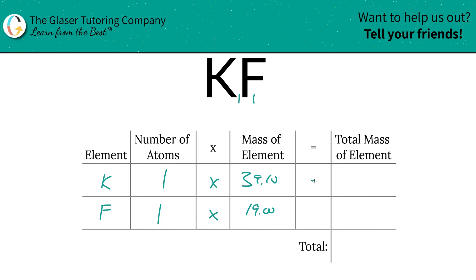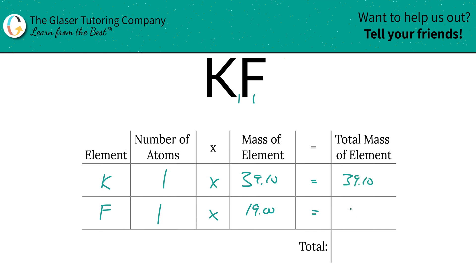Then to find the total mass of each element of the compound, we're simply going to multiply this row on together. So that's going to be 39.10 and this is 19.00.